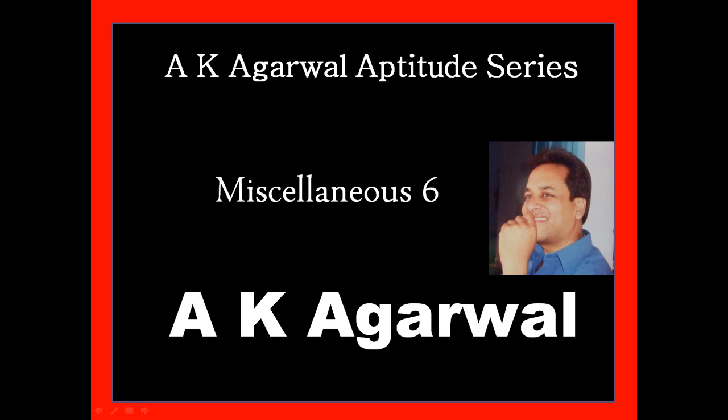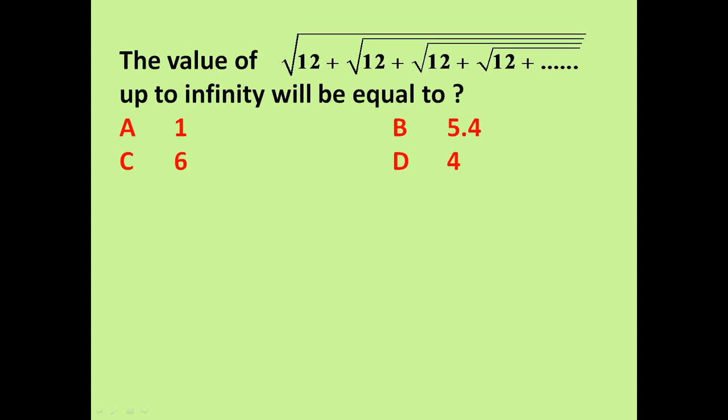Hello friends and welcome to AK Agarwal Aptitude Series. In this session, we are going to learn a technique for solving a problem on quantitative aptitude. Here, the given problem is: the value of √(12 + √(12 + √(12 + ...))) up to infinity will be equal to? Four options are given.